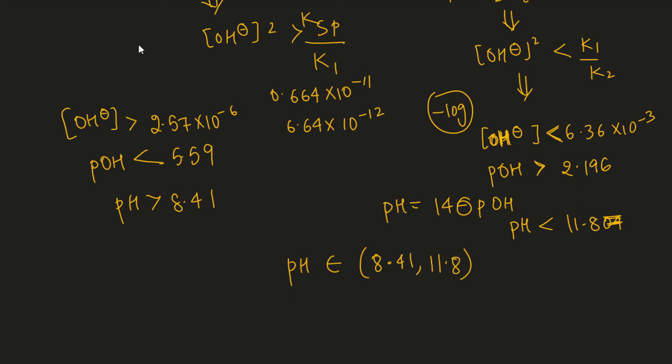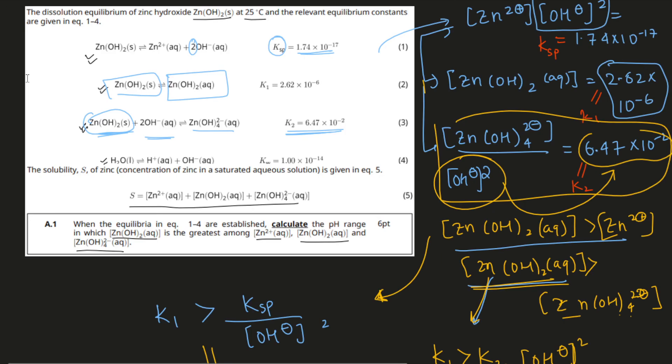In this pH range, the concentration of zinc hydroxide aqueous is actually the highest — the greatest among all three species.